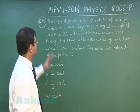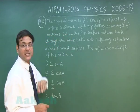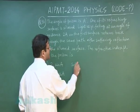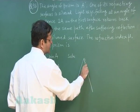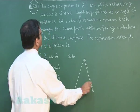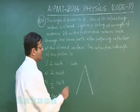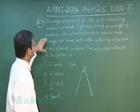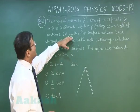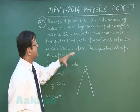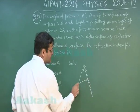Question 38 is based on a prism. The angle of the prism is A, and one of its refracting surfaces is silvered. Light rays fall at an angle of incidence 2A on the first surface. The ray returns back through the same path after suffering reflection at the silvered surface, which is possible only if the angle of incidence at the silvered surface is 90 degrees.